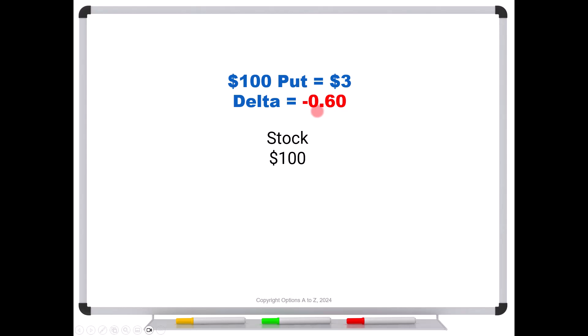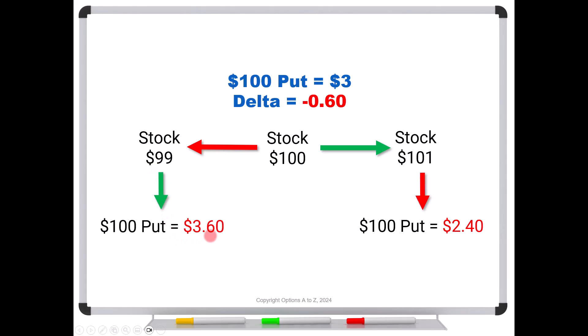So if we see that our put has a delta of minus 0.60, and the stock is 100, and it makes an instantaneous jump to 101, we would expect that that put should be trading for about $2.40. Should lose about 60% of that $1 move. If the stock price falls $1 to 99, you would expect that that put should pick up 60 cents or 60% of that dollar fall, and should be trading for $3.60.